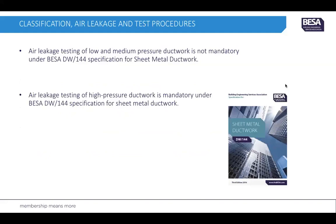Regarding classification of air leakage and test procedures: testing of low and medium pressure ductwork is not mandatory under the HVCA DW144 specification for sheet metal ductwork. However, air leakage testing for high pressure ductwork is mandatory under the HVCA DW144 specification.